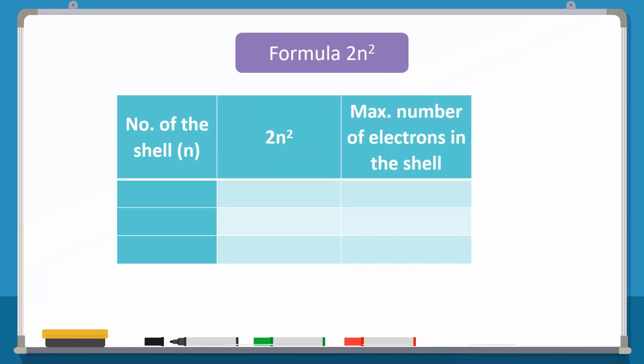For example, for shell 1, n is equal to 1. Using the formula 2n squared, we see that the maximum number of electrons in shell 1 or K is 2.